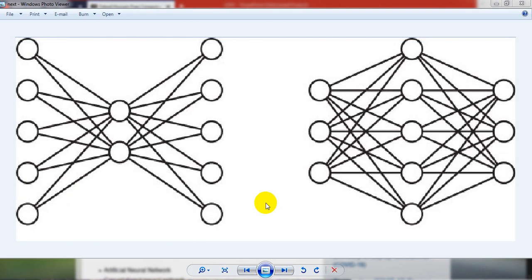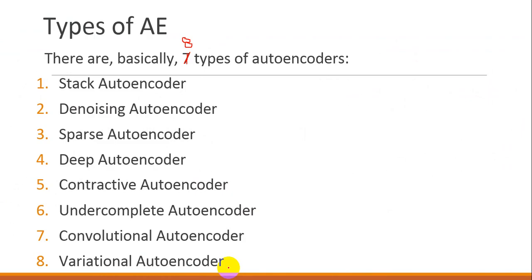One of the important points here is that there are many scenarios and datasets where the number of features is more than our input nodes, for which we need more hidden nodes. In this over-completeness, there are different variations based on our nodes, and based on these variations, different types of autoencoders exist. We will discuss these types.